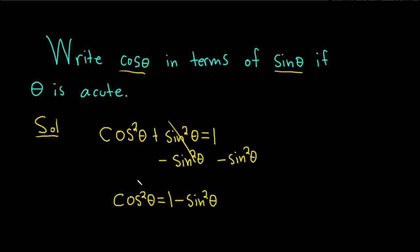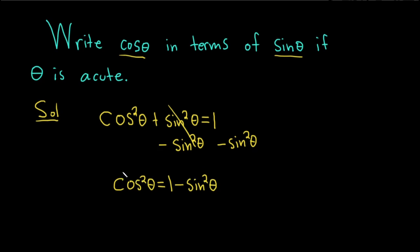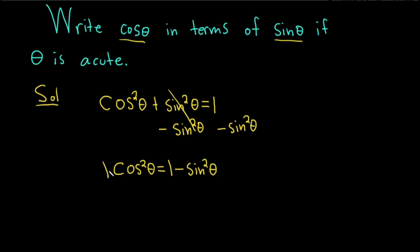Okay, so we're looking for cosine. Now because it's being squared, we'll take the square root of both sides.